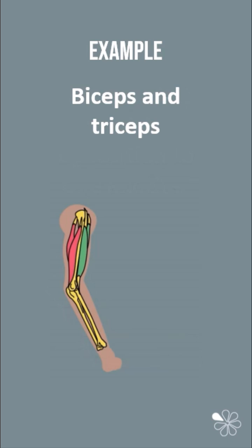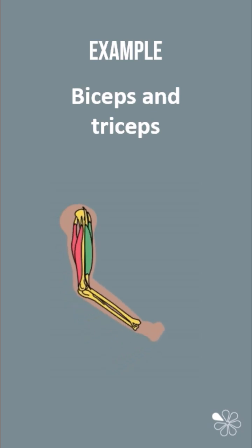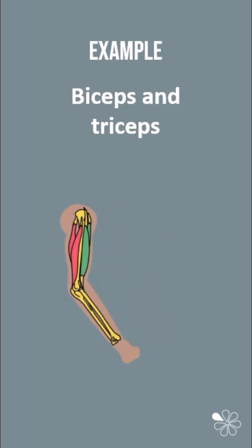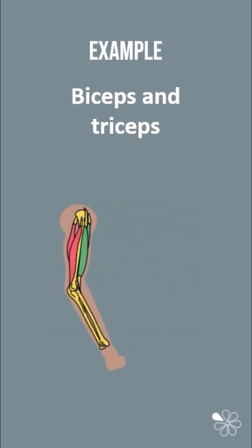For example, when you perform a bicep curl, your bicep muscle, shown in green, contracts and shortens to move the arm at the elbow joint, pulling the arm up. At the same time, the tricep muscles, shown in red, relax and lengthen to permit the movement.